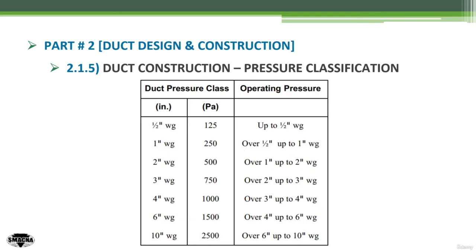Following up from SMACNA, we have a small table showing the pressure classification. As you can see, it's divided into two main columns: the first column is duct pressure classification, and the second column is the operating pressure. The second column is the input and the first column is the output — you go into this table with the second column, which is the operating pressure.